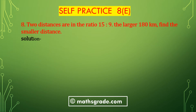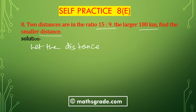Question number 8: Two distances are in the ratio 15:9. The larger distance is 180 kilometers. Find the smaller distance. Let the distances be 15x and 9x. The larger distance is 180 kilometers.